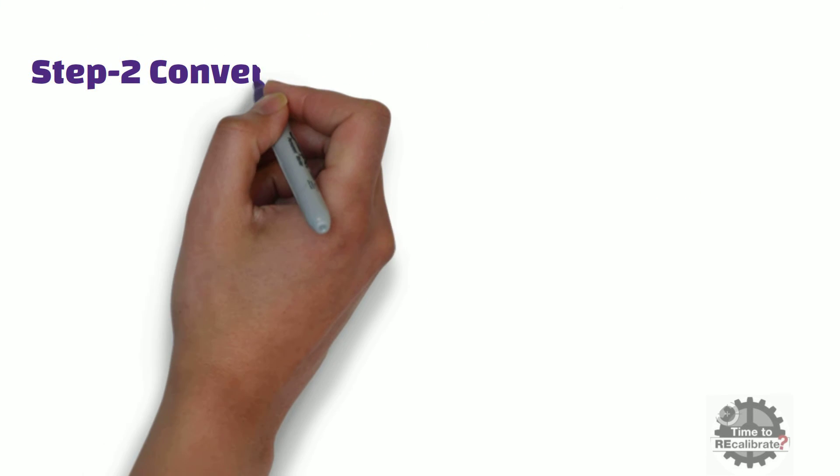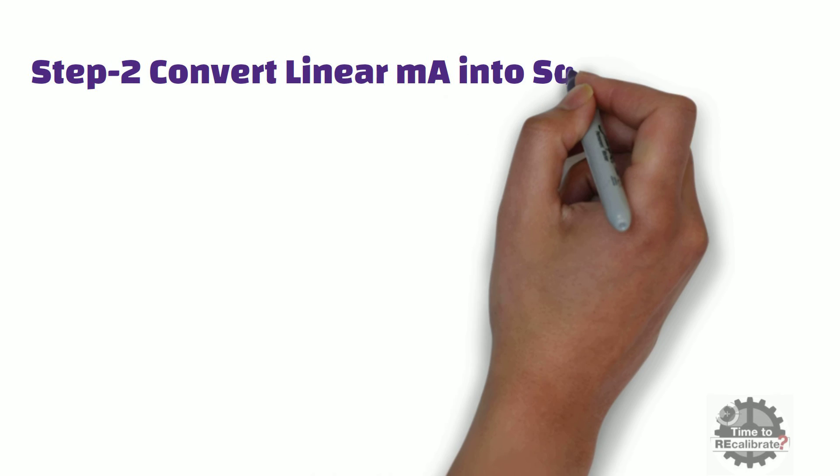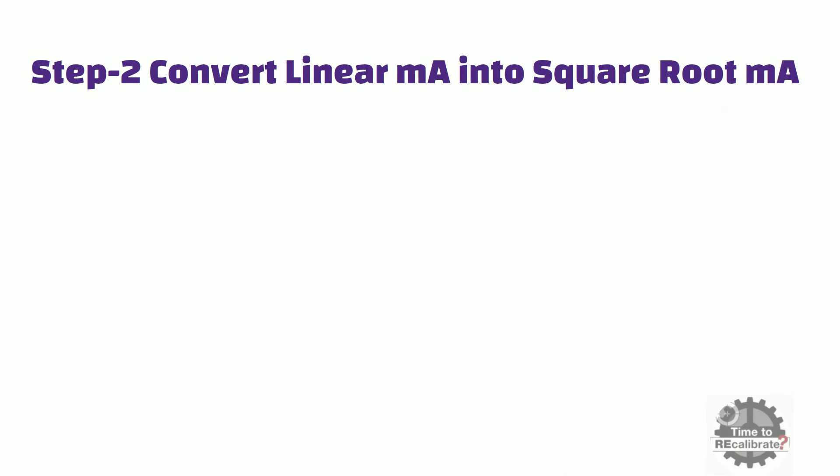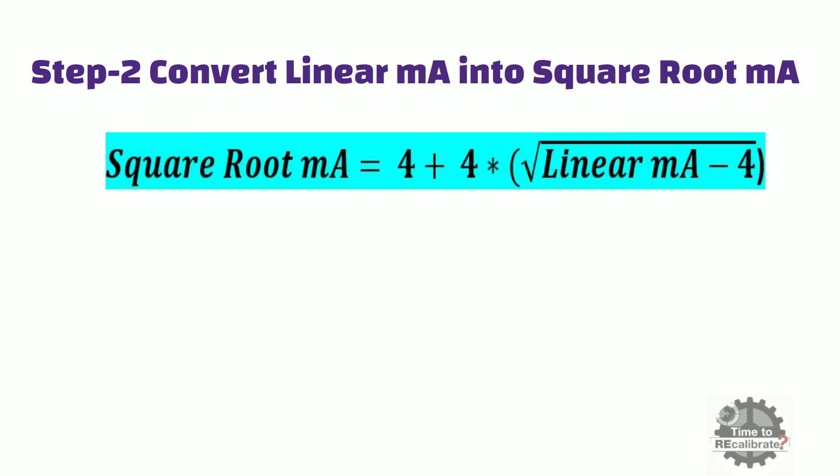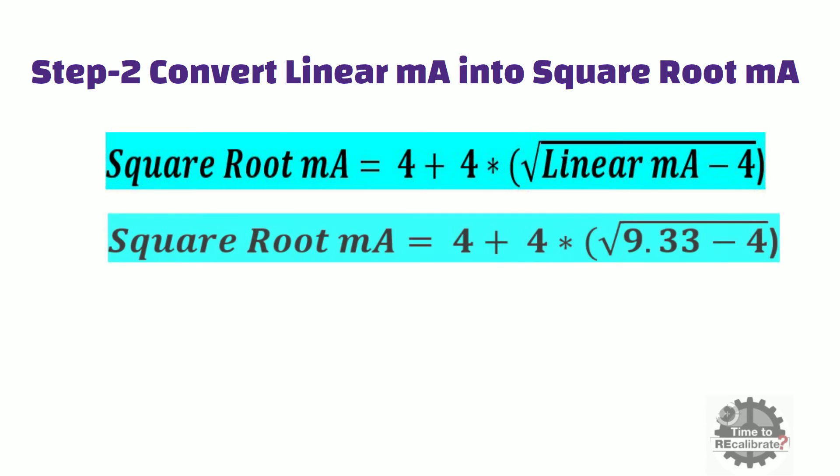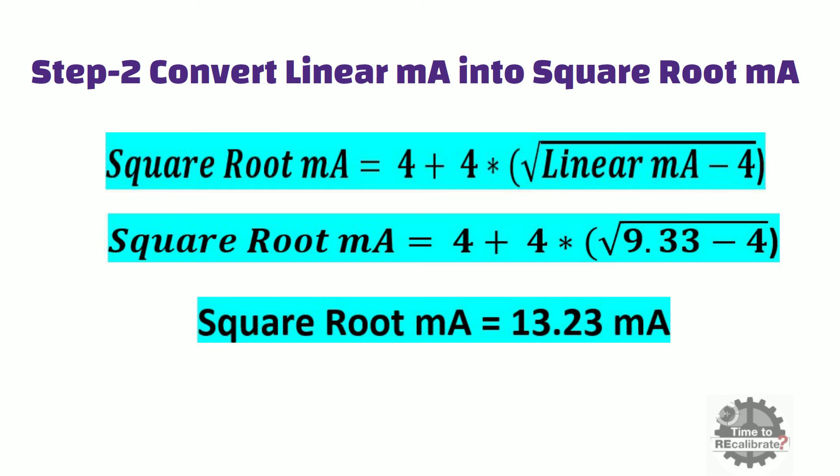Now in the second step, I am going to convert linear milliampere into square root milliampere. This is the standard equation for square root milliampere conversion, and we need to put the linear milliampere value in this equation. Then do the simple math calculation. You will get 13.23 milliampere.